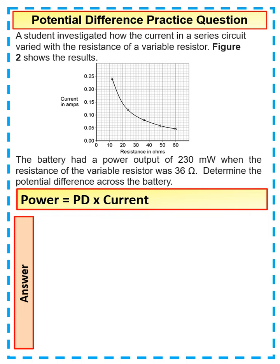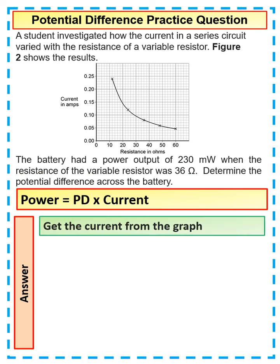When the resistance of the variable resistor was 36 ohms, determine the potential difference. So we're working out what the voltage was. The first thing that I'd do, apart from work out which equation we're going to use.